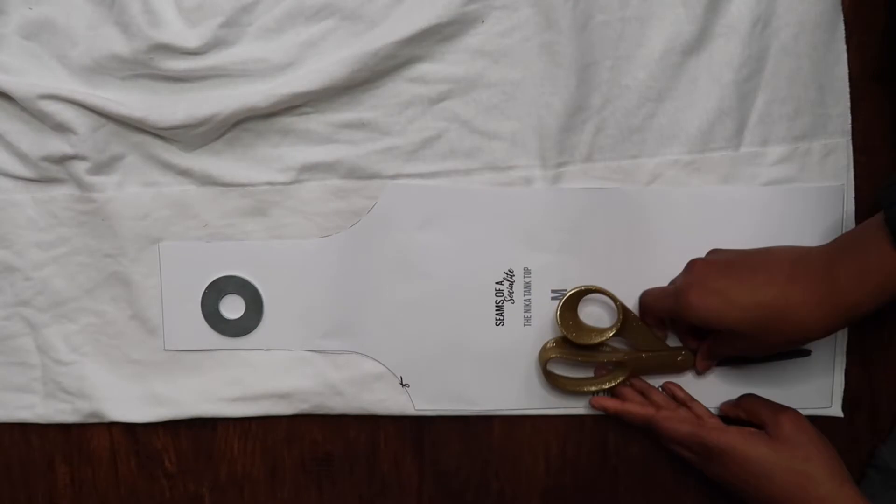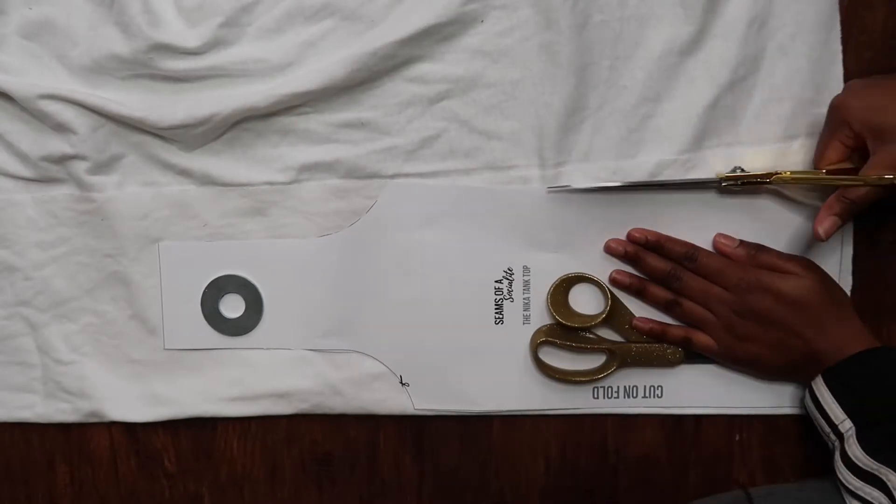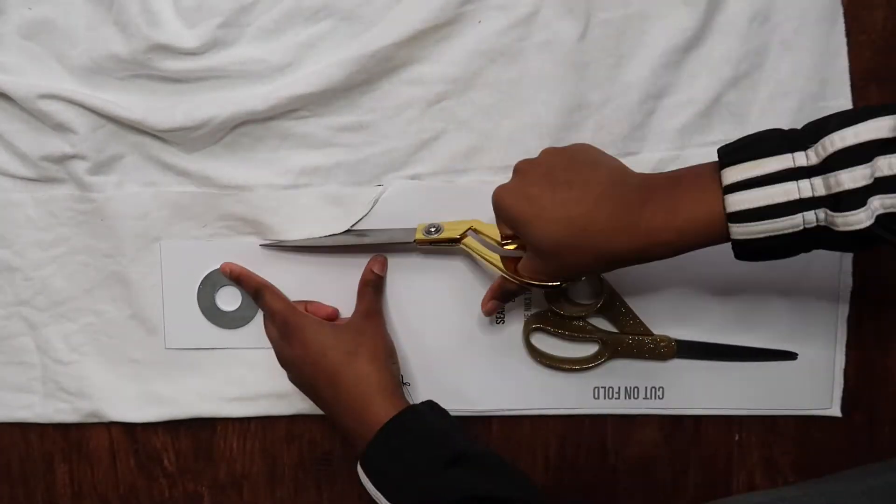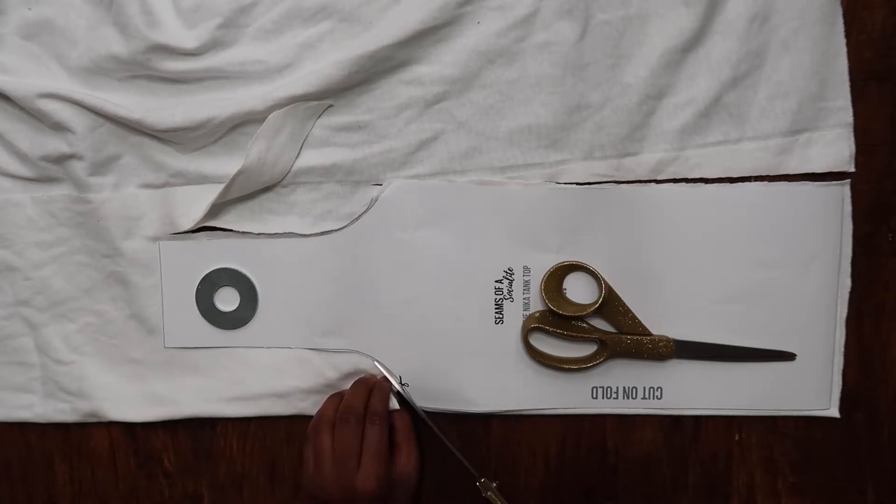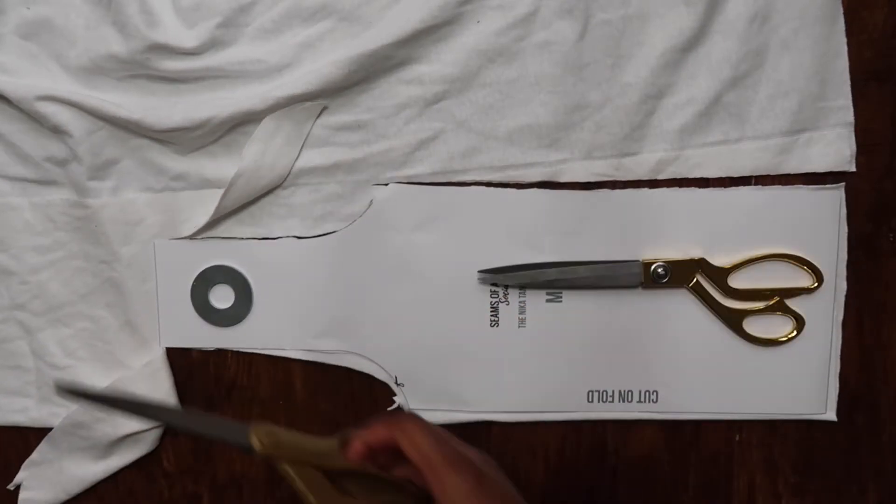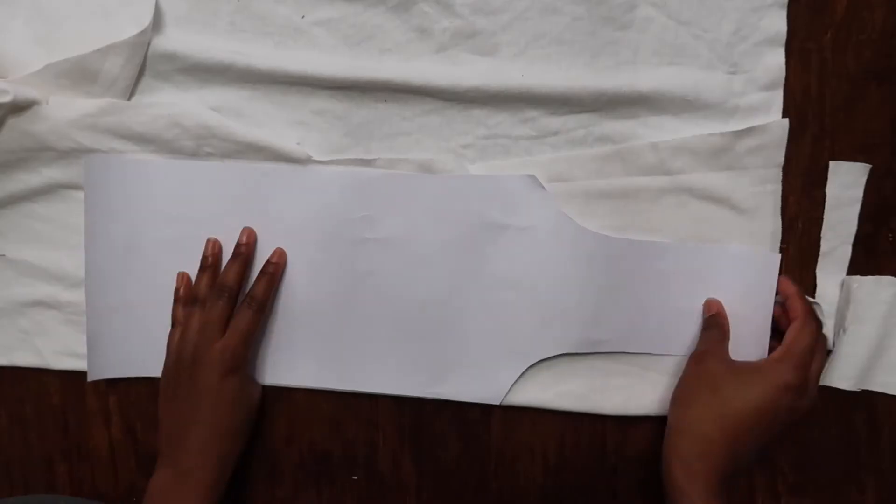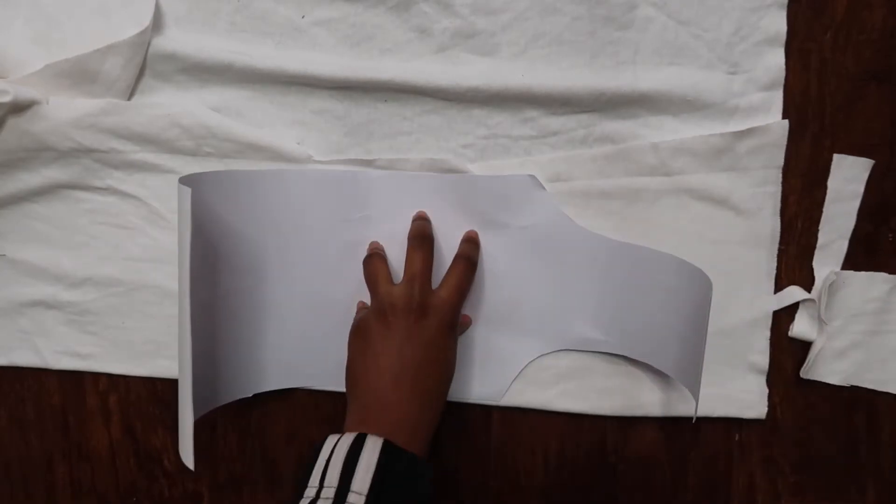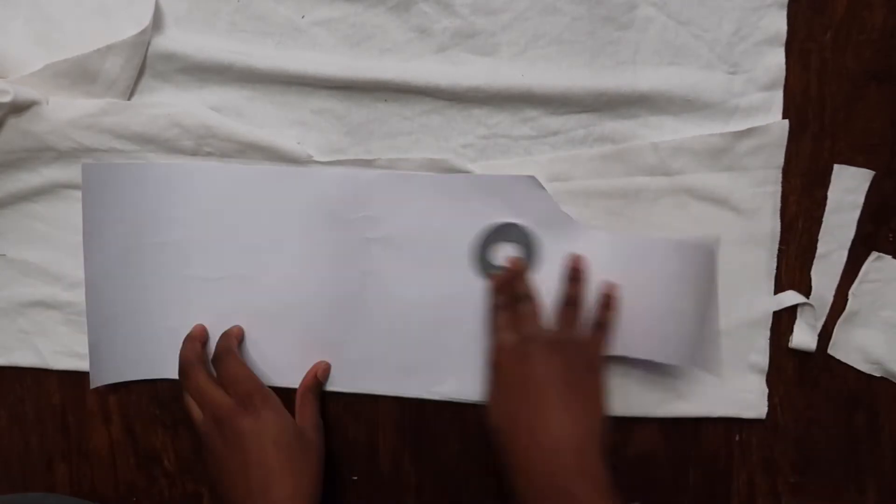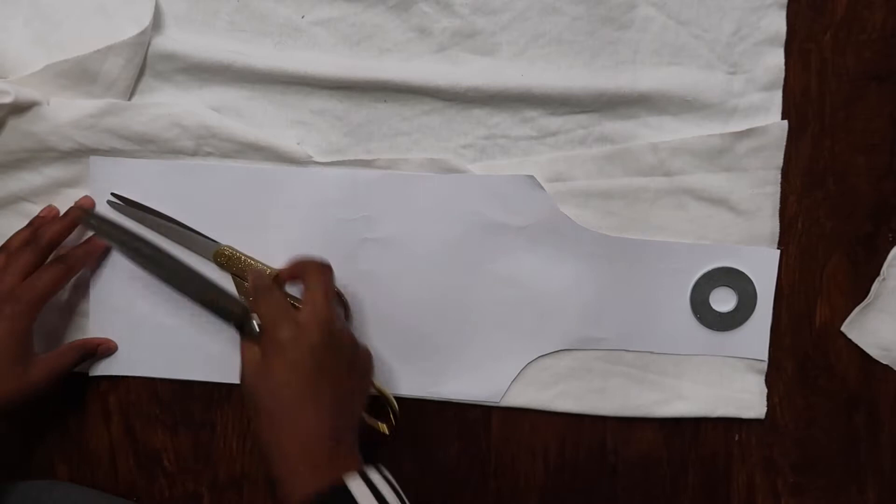I'm going to go ahead and lay my patterns, making sure it's on the fold, and just cut everything out. I recommend using a rotary cutter because, as you can see, I switched scissors—it was a lot to cut through the curved areas. Just use a rotary cutter and cut all your pattern pieces out.